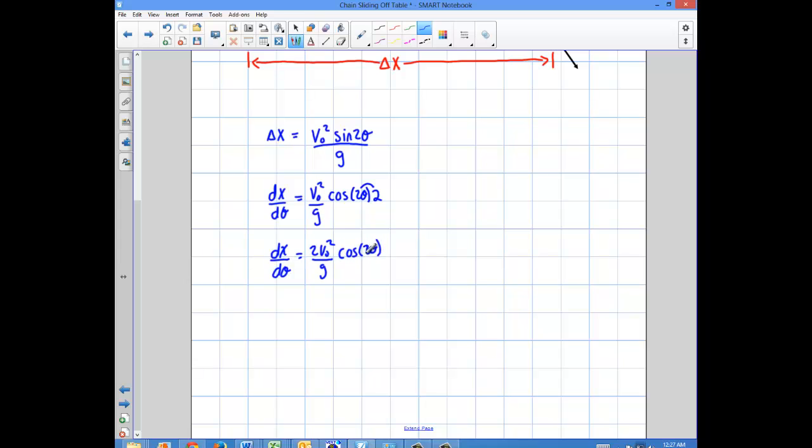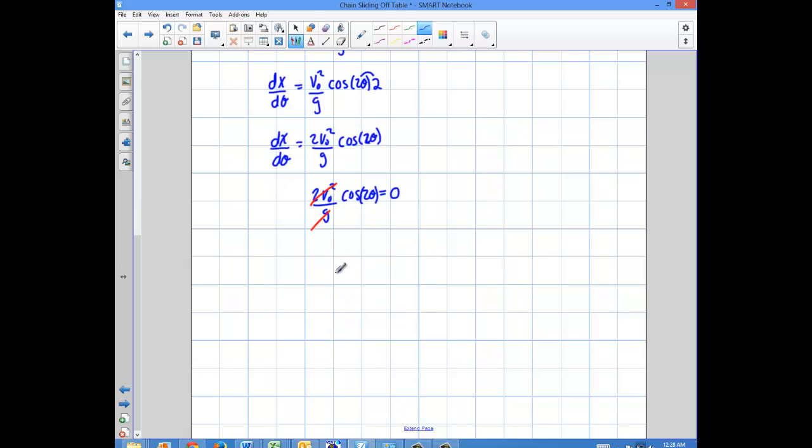And what I'm going to do is I want to find the maximal value for that, so I'm going to set that derivative equal to 0. So I'm going to say 2 v0 squared over g cosine 2 theta is going to equal 0. Now, these are going to cancel out because I'm just going to divide those over. Those are just going to drop out. So I'm really going to end up with cosine 2 theta equals 0.